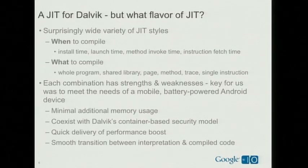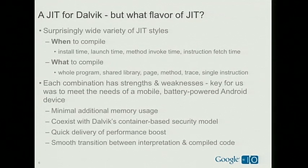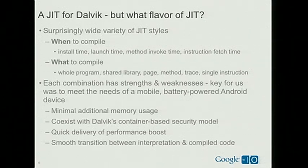We like to think of the JIT design space along two axes. Along one axis: when do you do the compilation? You could do it when you first install the application, the first time a method is called, or when you page in code from disk. The other axis: what is the unit of compilation? Do you compile the whole program, a whole shared library, a physical page of code, a method, a string of instructions, or even a single instruction? Looking back over 20 years of JIT compilers and dynamic translation systems, you could fill in every square of that matrix, and no one combination is universally best.